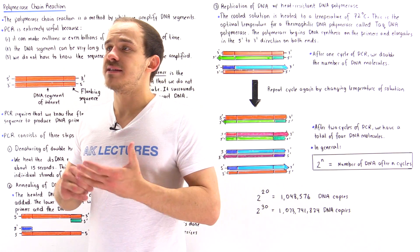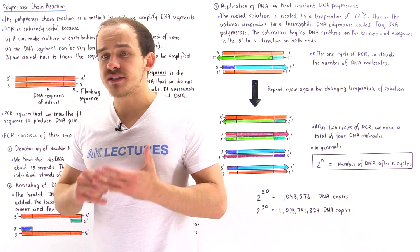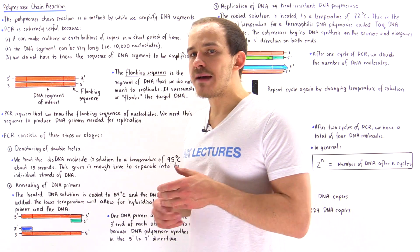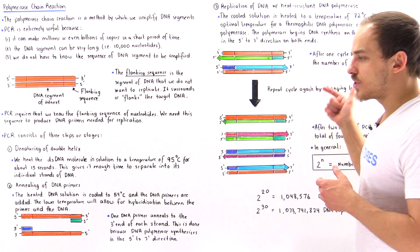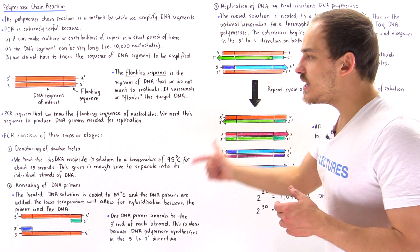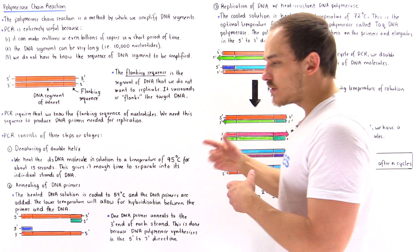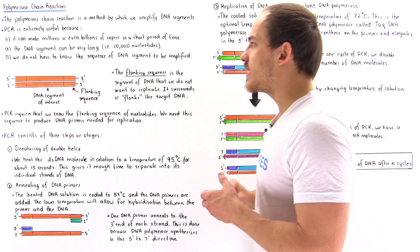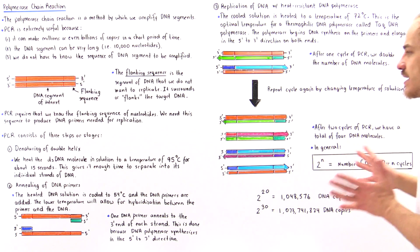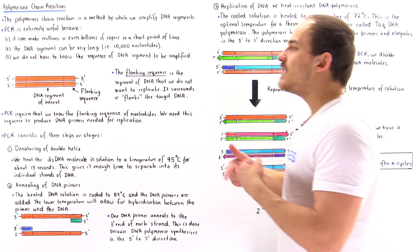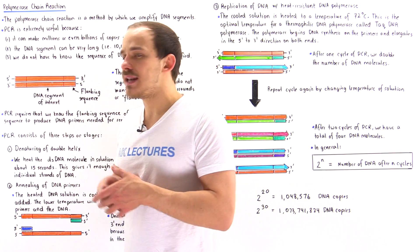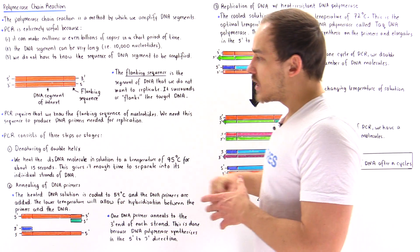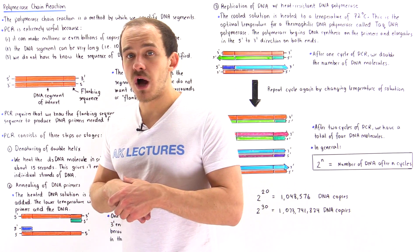Now let's look at the actual process of the polymerase chain reaction. We can break this process down into three steps or stages: step one, step two, and step three. These three steps compose one cycle of the polymerase chain reaction, and we can conduct many cycles to produce as many DNA copies as we want.